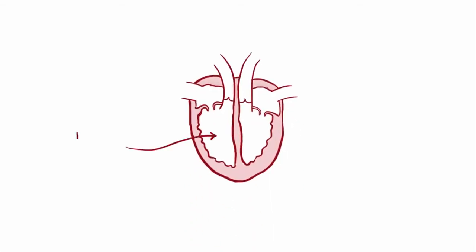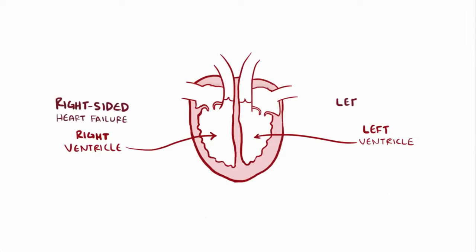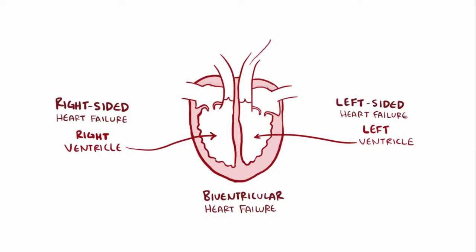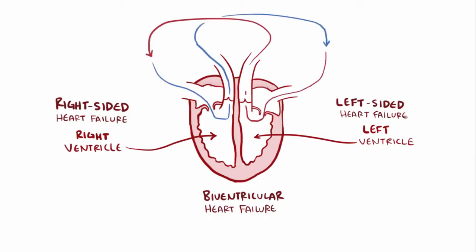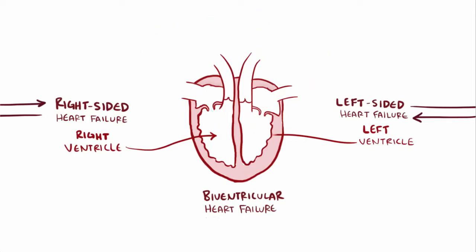Heart failure can affect the right ventricle, the left ventricle, or both ventricles, so someone might have right-sided heart failure, left-sided heart failure, or both, which is called biventricular heart failure, each of which can have systolic or diastolic failure. If less blood exits either ventricle, it'll affect the other since they work in series — so left-sided could cause right-sided, and vice versa. These terms really refer to the primary problem affecting the heart, basically which one was first.